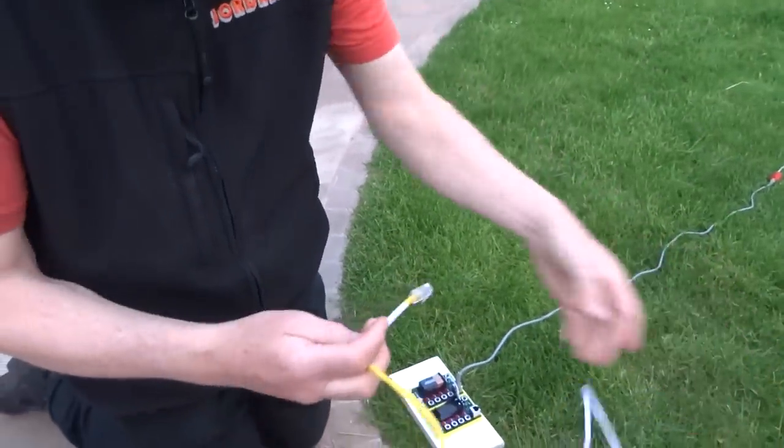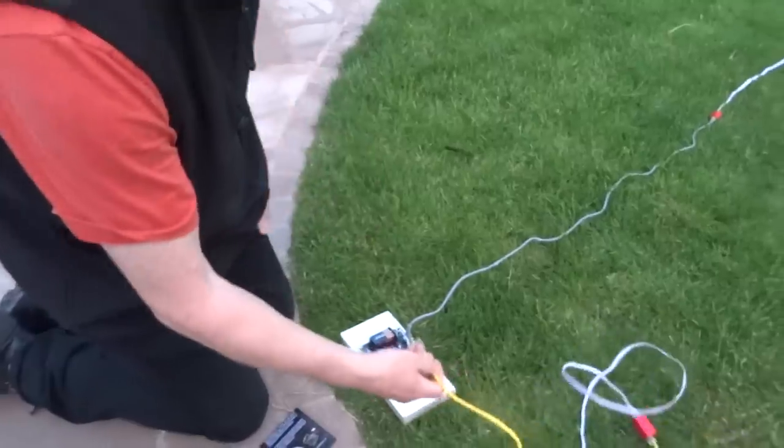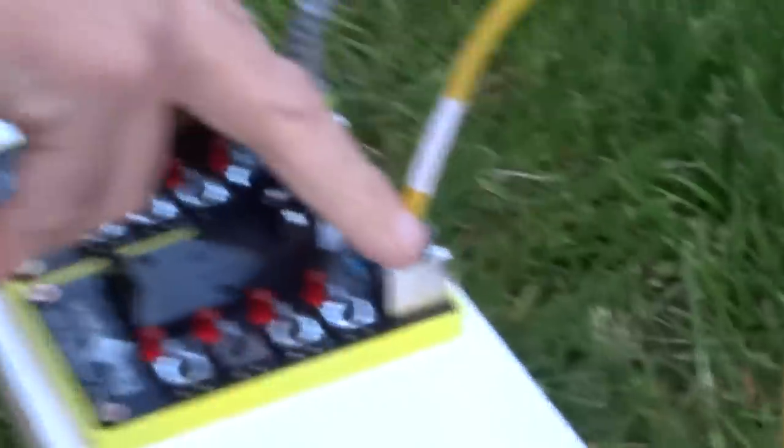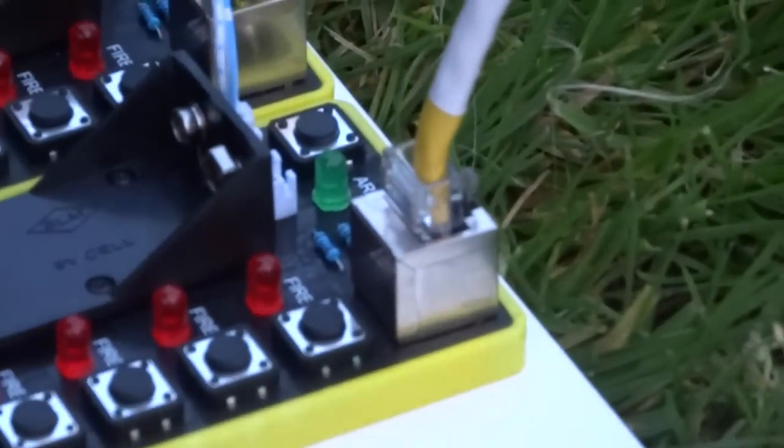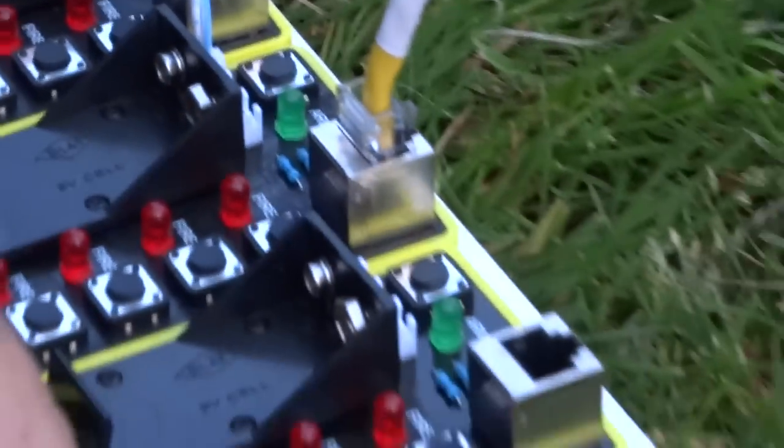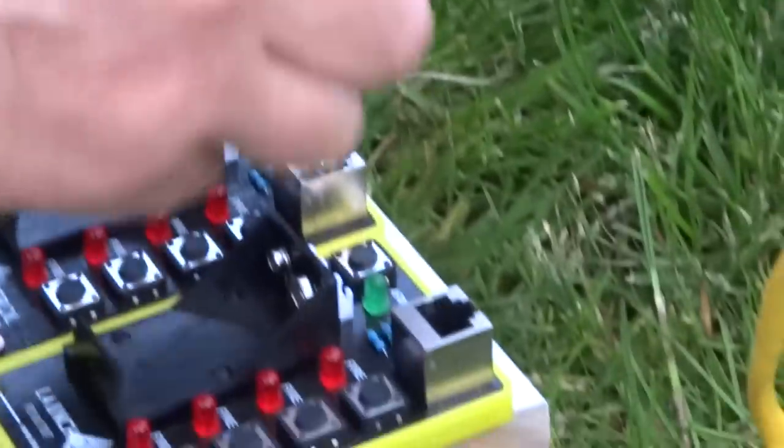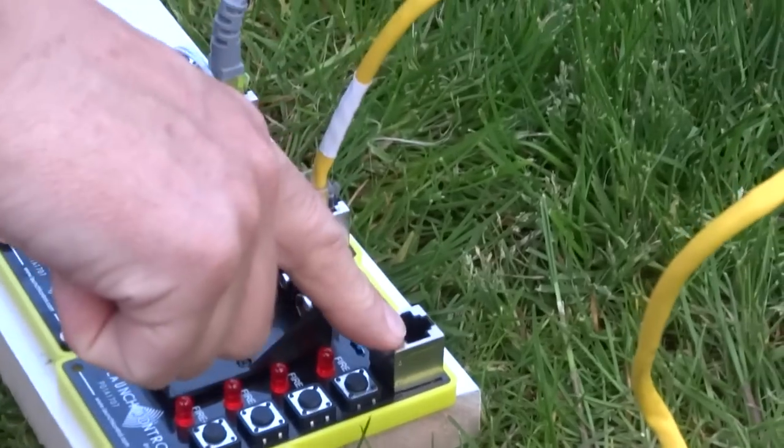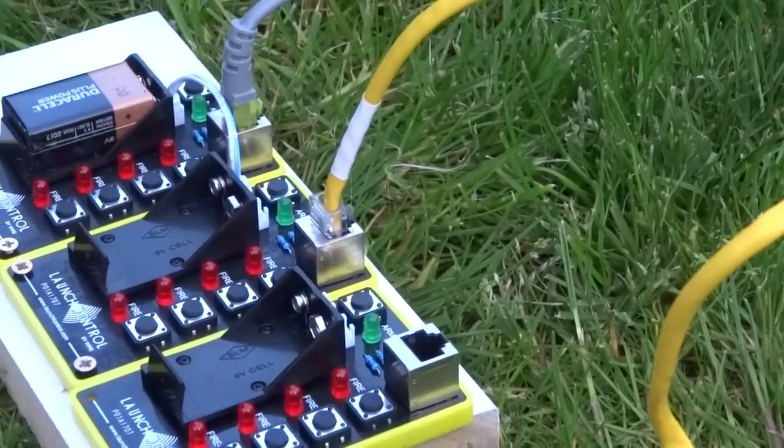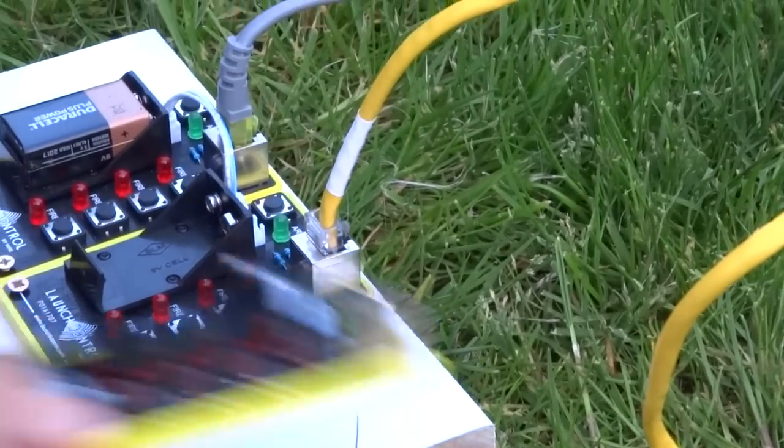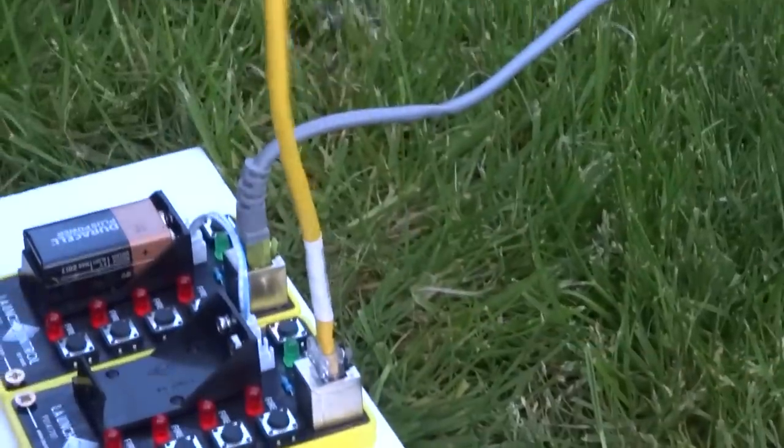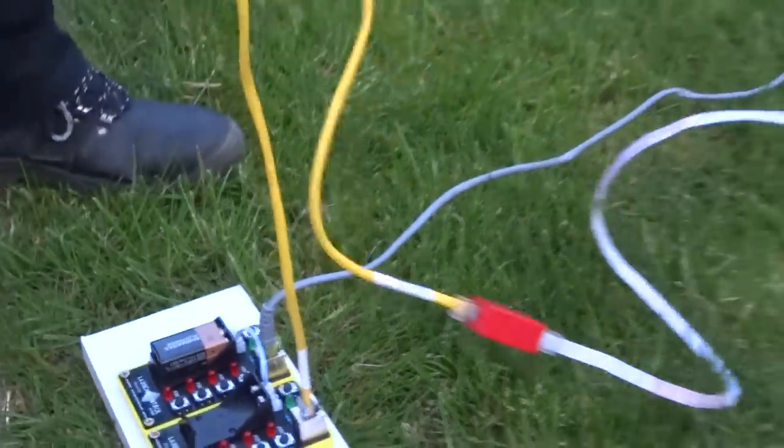The Cat5 cable then pushes into this socket here on the board and each board has got one of those sockets on it. So if we had another board here with a connecting cable going from that one to that one we would then need another Cat5 cable running off to another four fireworks. We'll run these out now to the fireworks.